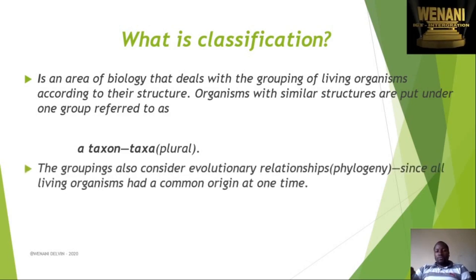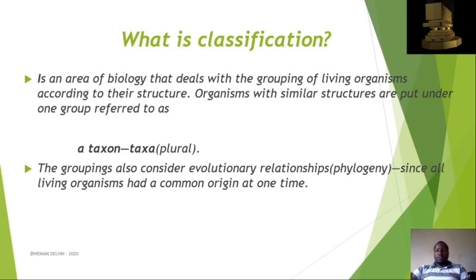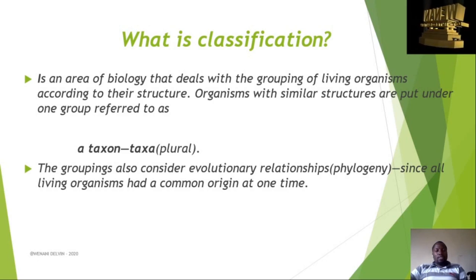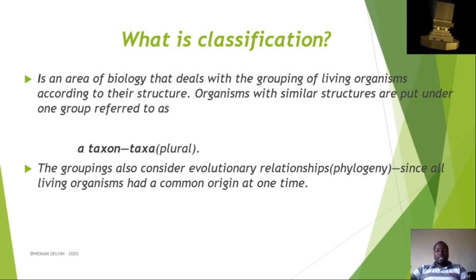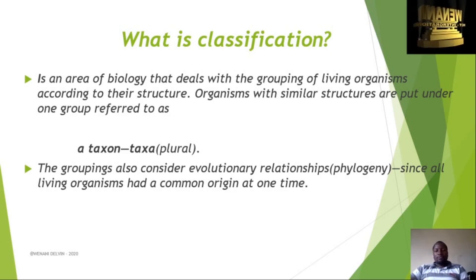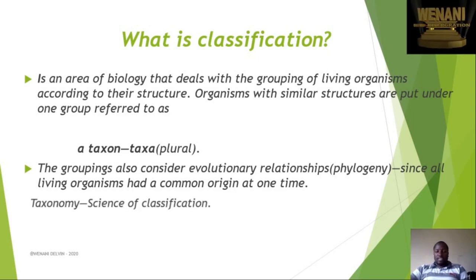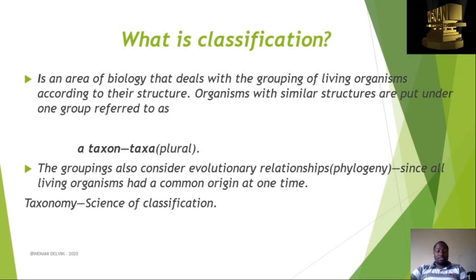This grouping of organisms also considers what we call the evolutionary relationship — did we evolve from a single group? According to our structures, do we tend to be related in terms of evolutionary history? If organisms share evolutionary histories, they are put together. So classification considers evolutionary relationships.